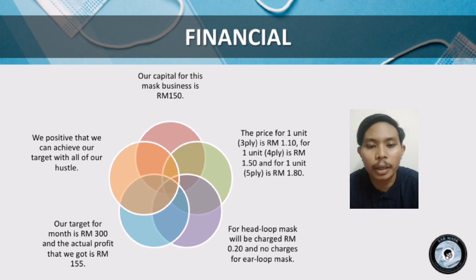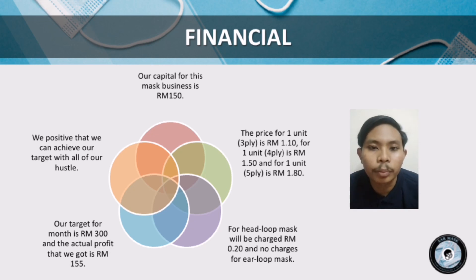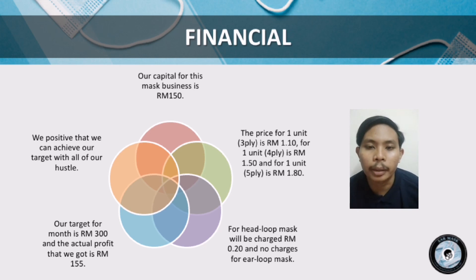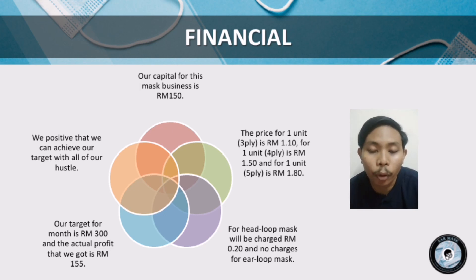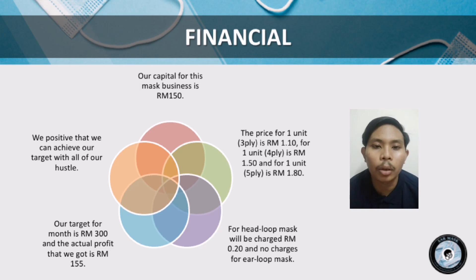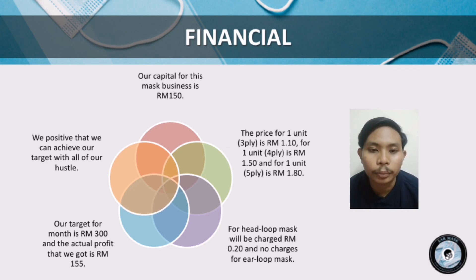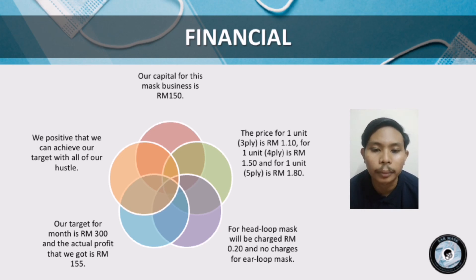Assalamualaikum. My name is Muhammad Syamizi bin Shahrin, metric number A21A3331. For the financials, our capital for this mask business is RM150. The price for 1-unit 3-ply is RM1.10, for 1-unit 4-ply is RM1.50, and for 1-unit 5-ply is RM1.80. For head loop, we charge 20 cents, with no charge for ear-loop. Our target for the month is RM300 and the actual profit we got is RM155. We are positive that we can achieve our target with all of our effort. That's all, thank you.